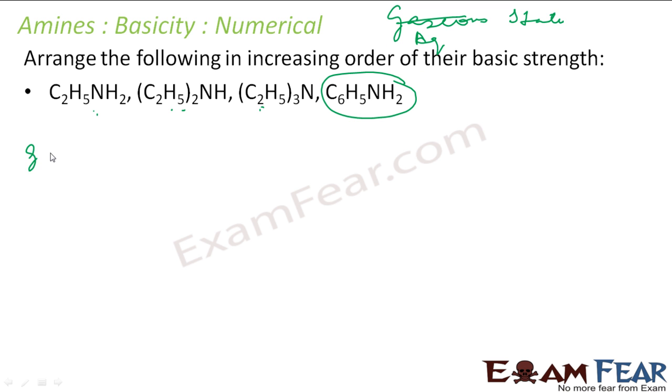If it is gaseous state, it is pretty easy. This is having three alkyl groups. This is most basic. This is having two alkyl groups, next most basic. This is one alkyl group, lesser basic, and this is the least. So if in gas state, this is my first. And then this guy with two ethyl groups, and then this with one ethyl group. This is N, this is NH. This is NH2.